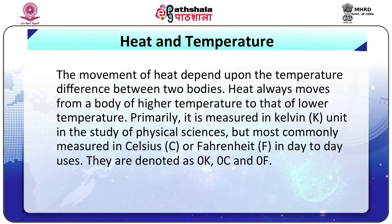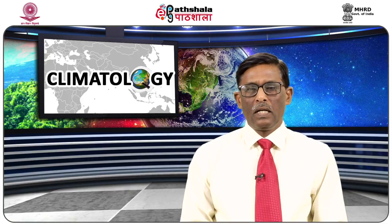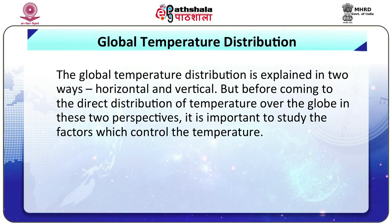Heat always moves from a body of higher temperature to that of lower temperature. Temperature is primarily measured in Kelvin unit in the study of physical sciences, but most commonly measured in Celsius or Fahrenheit in day-to-day use. They are denoted as 0 degree Kelvin, 0 degree centigrade, and 0 degree Fahrenheit. Coming to global temperature distribution: it is explained in two ways — horizontal and vertical. Before studying the direct distribution of temperature over the globe, it is important to study the factors which control the temperature.